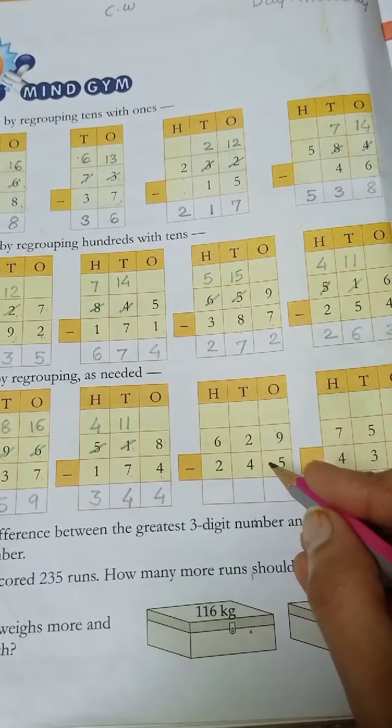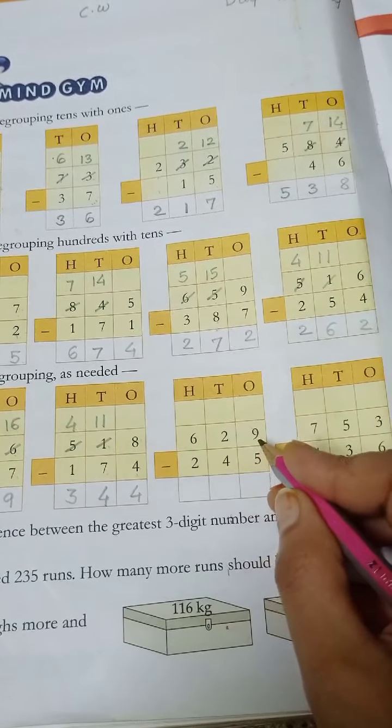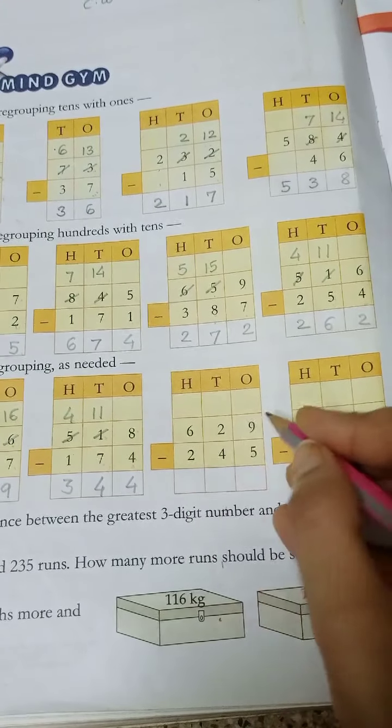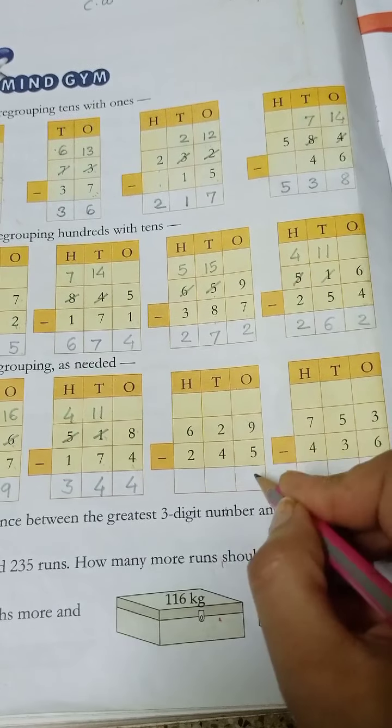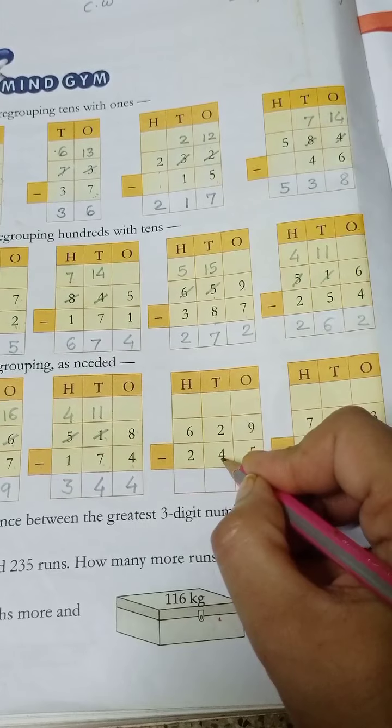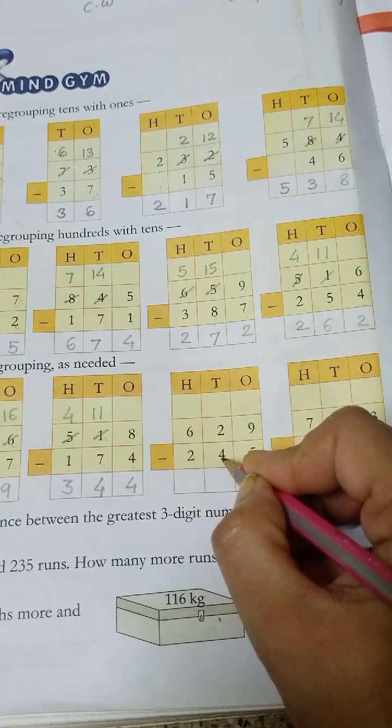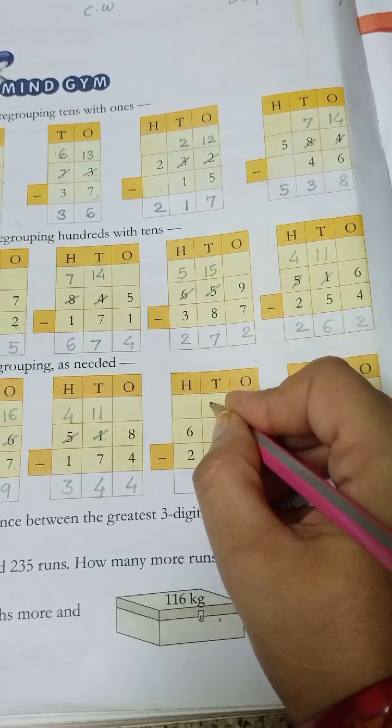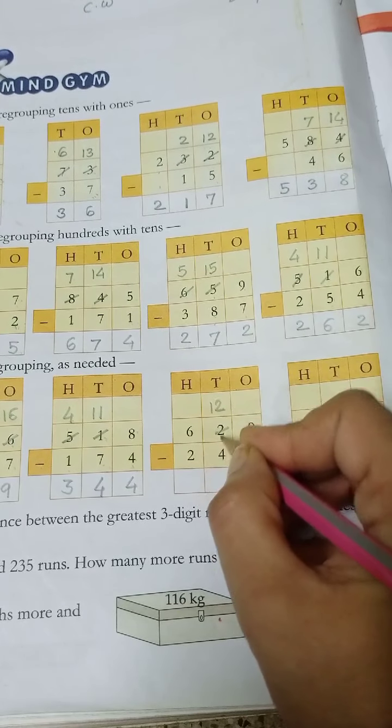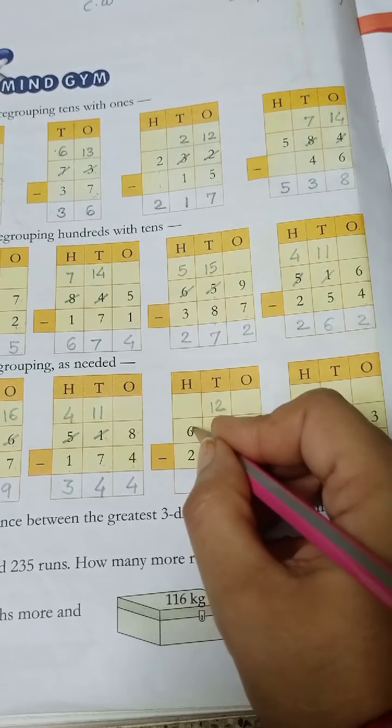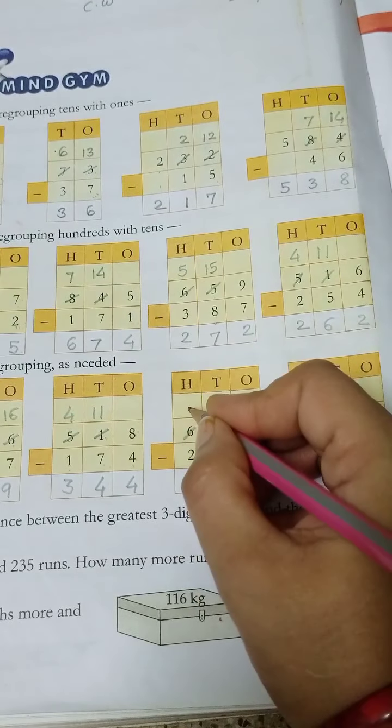The next number, 629 minus 245. Then 9 minus 5 is 4. 2 minus 4, is it possible? No. So you add this number 10, 10 plus 2 is 12. And 12 minus 4 is 8. Then 6 minus 1 is 5. Then 5 minus 2 is 3.